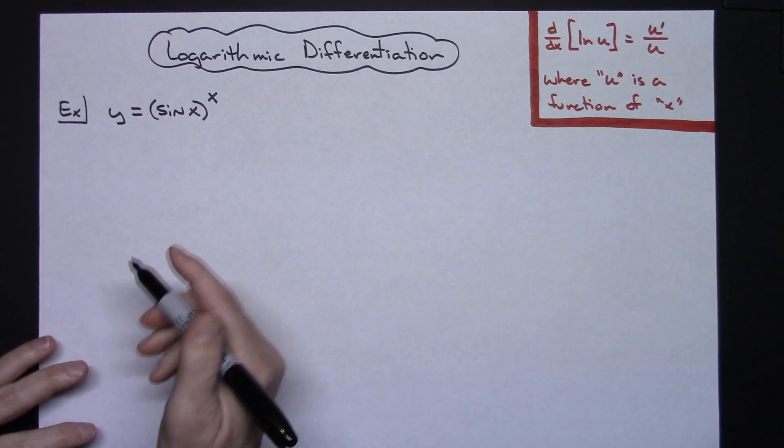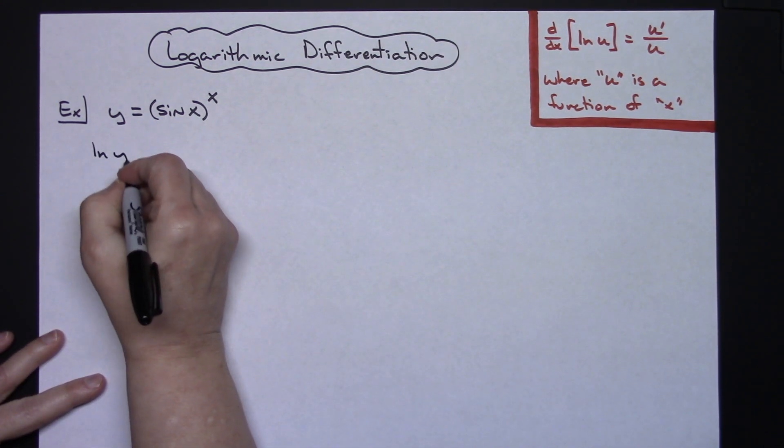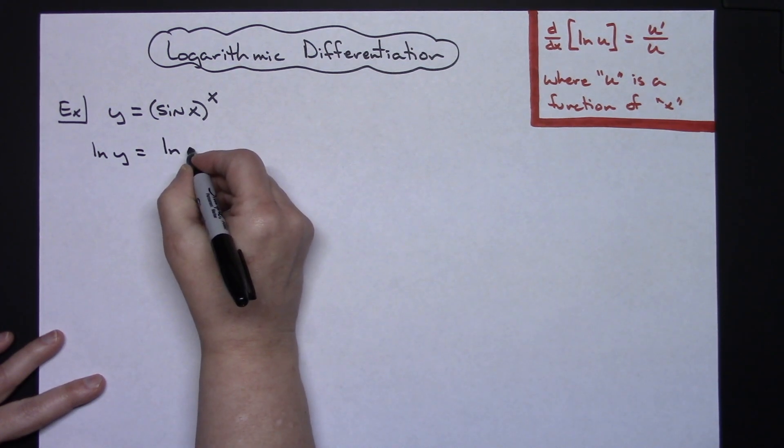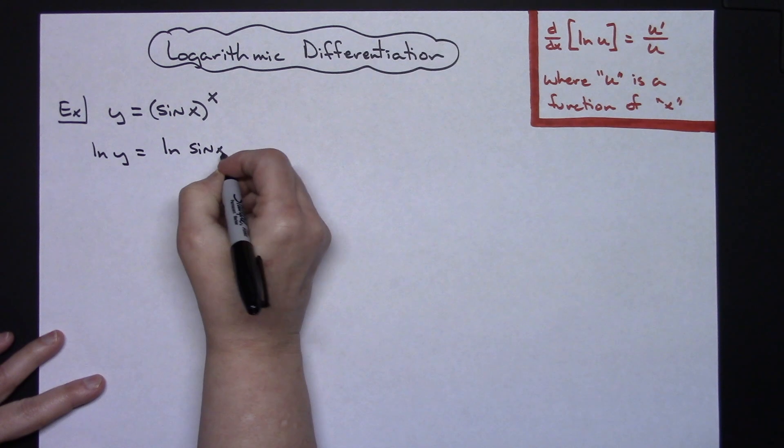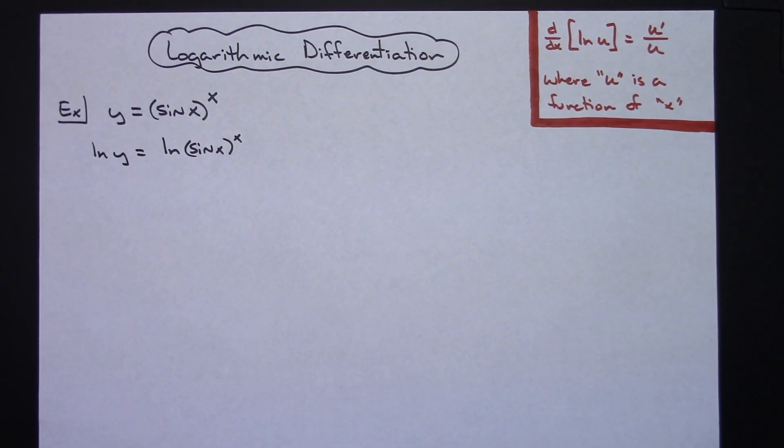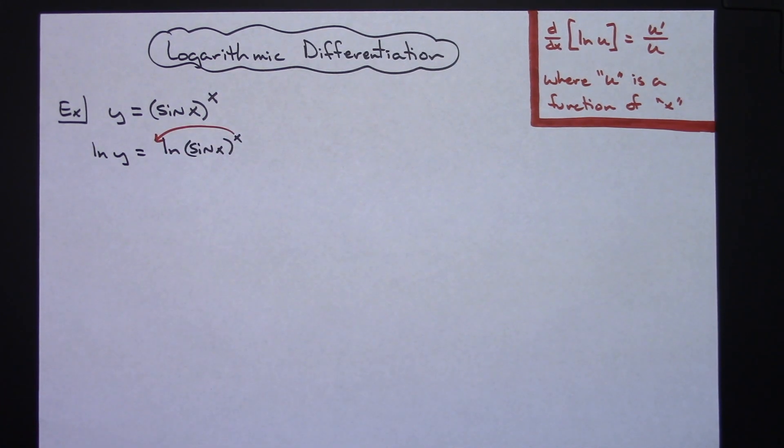If this is simplified pretty much as much as you can, then you're just going to start by taking the natural log of both sides. So I'm going to have natural log of y equals the natural log of the sine of x raised to the x power.